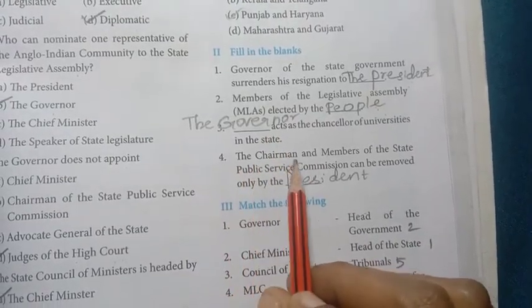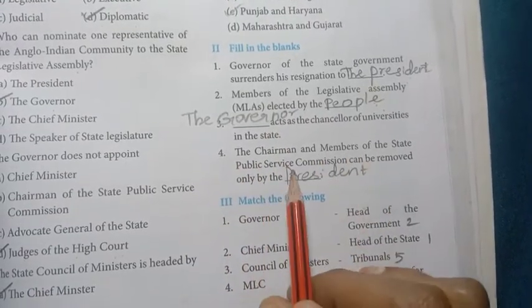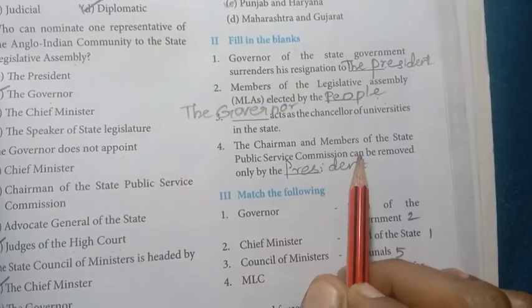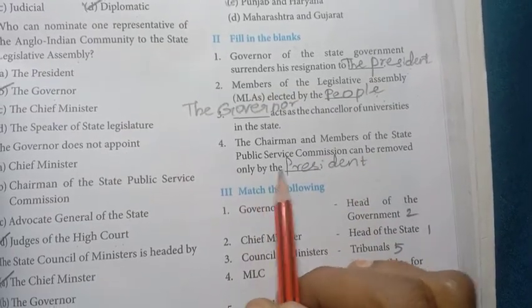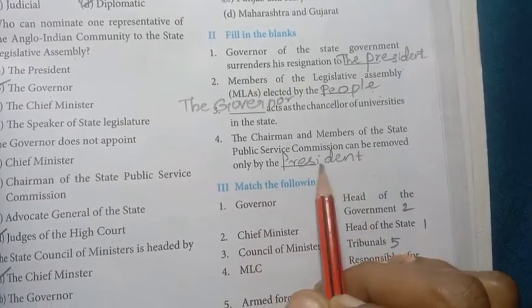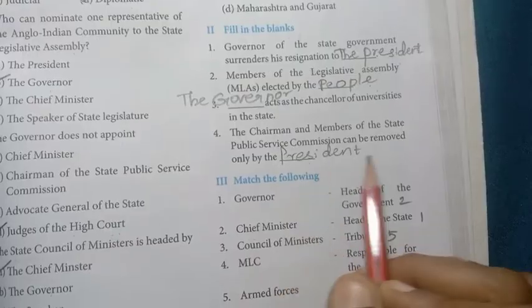Number four: the chairman and members of the state public service commission can be removed only by the President. Answer: President.